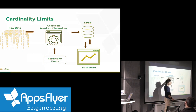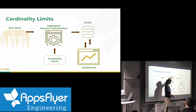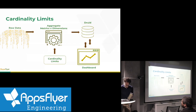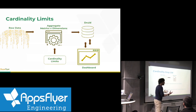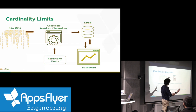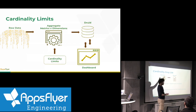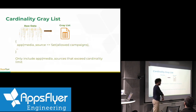We need to impose cardinality limits on the dimensions because if some of the data is generated from some kind of bug, it could end up having our database just fall over. The way we're doing this is by representing the cardinality information in what I call a gray list — and you'll understand in a second why it's not a white list and it's not a black list.